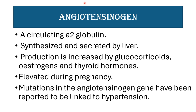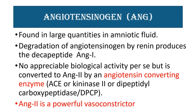Angiotensinogen is a circulating alpha-2 globulin, synthesized and secreted by the liver. Its production is increased by glucocorticoids, estrogen, and thyroid hormone, and it is elevated during pregnancy. Mutations in the angiotensinogen gene may be linked with hypertension. Angiotensinogen is found in large quantities in amniotic fluid and degrades into angiotensin 1.